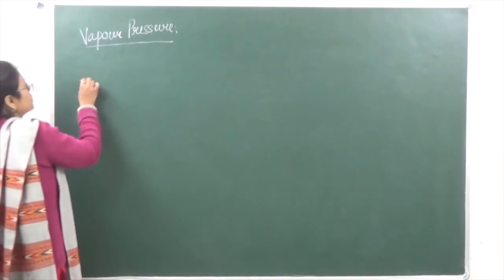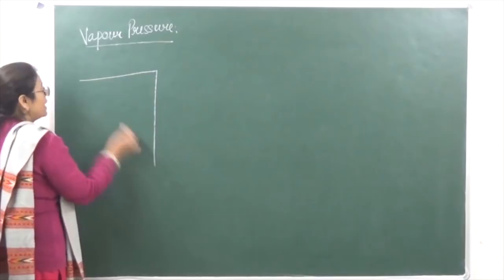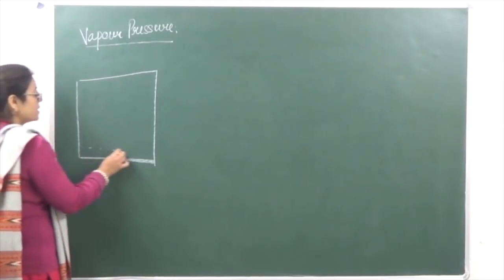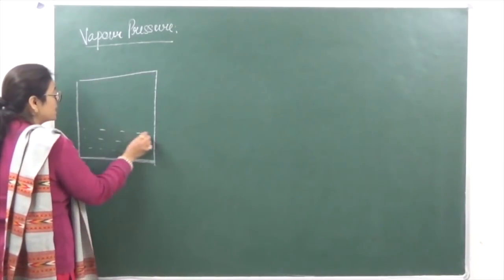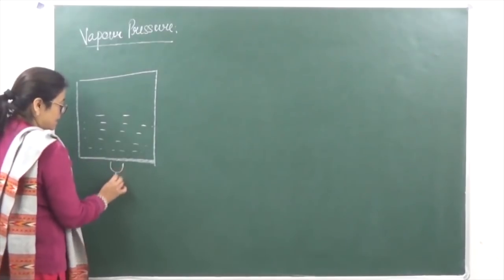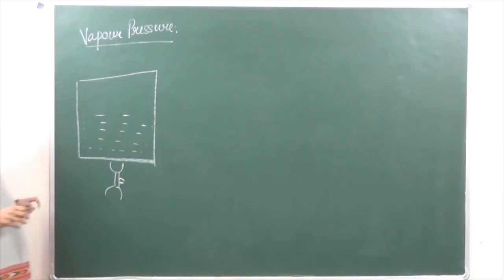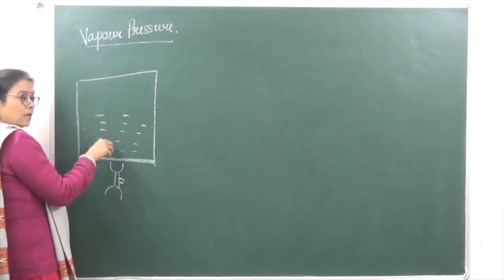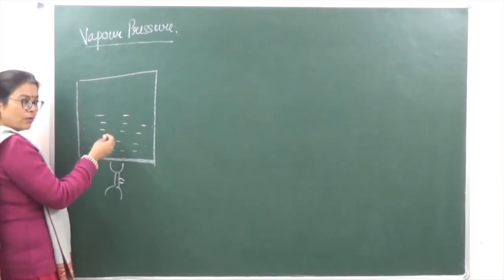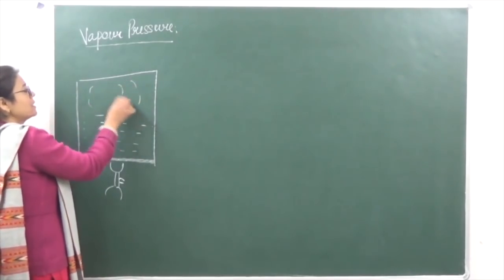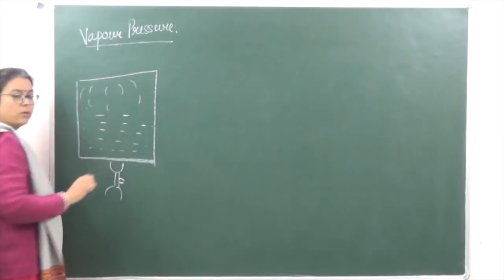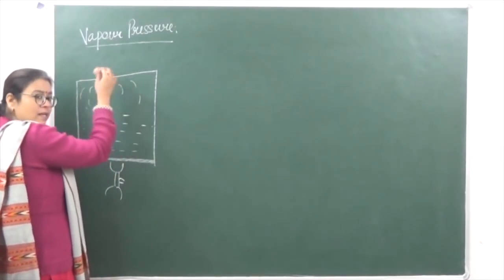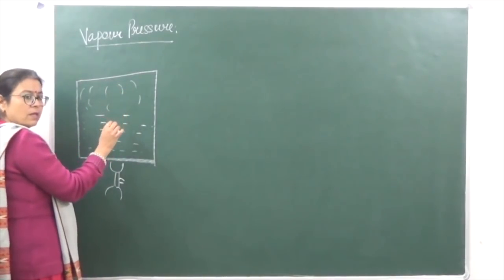To understand vapor pressure, let's take a closed container. In this container we are going to take water. Let's increase the temperature of water. What is going to happen is that a certain amount of liquid is going to get converted into the vapor state and that vapor will be present at the surface of the liquid. This vapor is not going to escape from this closed system.